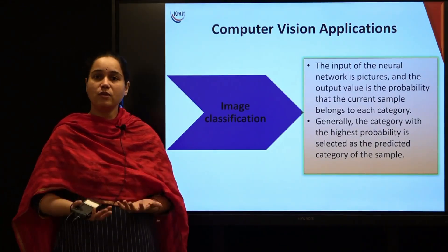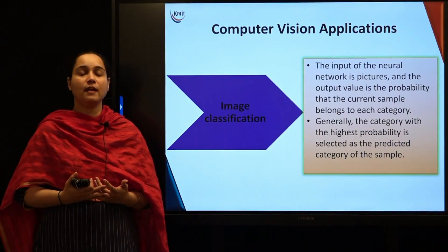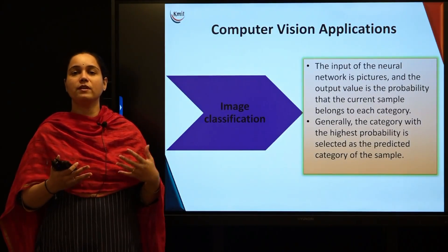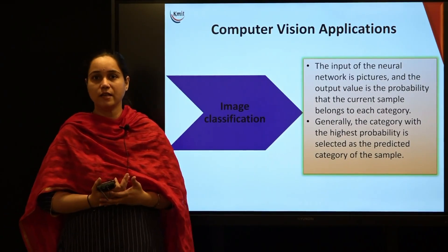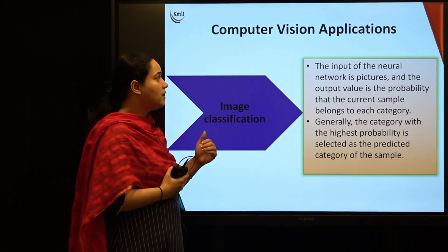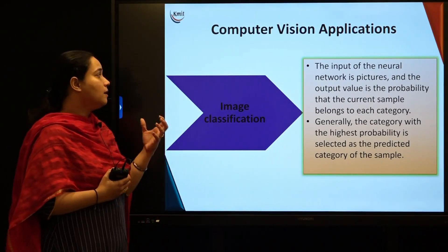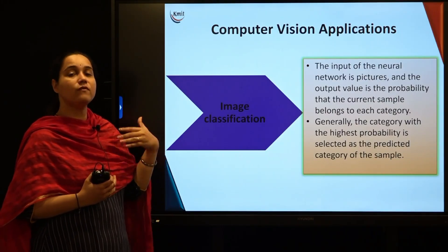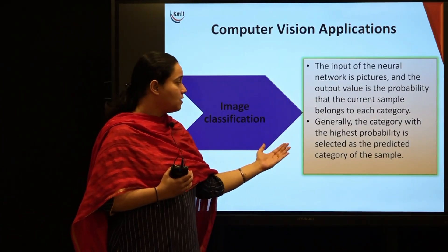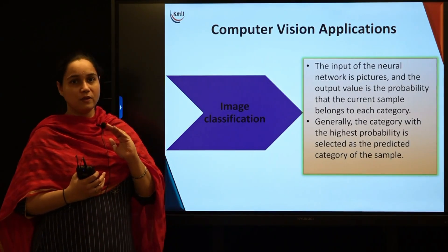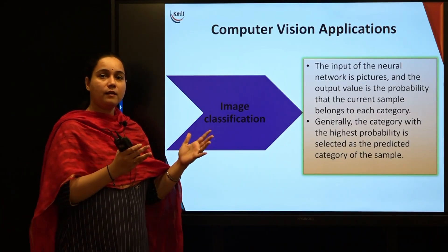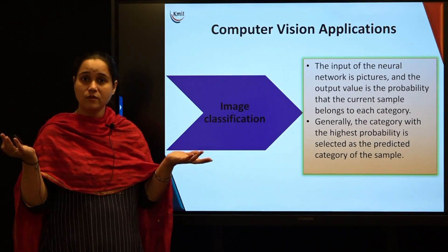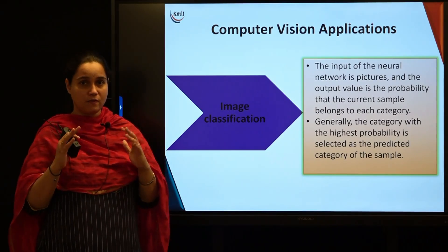In image classification, the input to the model is a large number of images and you train your model using labelled image data. At the end, you give a test image and ask your model to classify it. The input of the neural network is pictures and the output is the probability that the current sample belongs to a particular category. The category with the highest probability is selected as the predicted category. This is similar to a normal classification problem in machine learning, but here the data is images — very complex and high in volume.